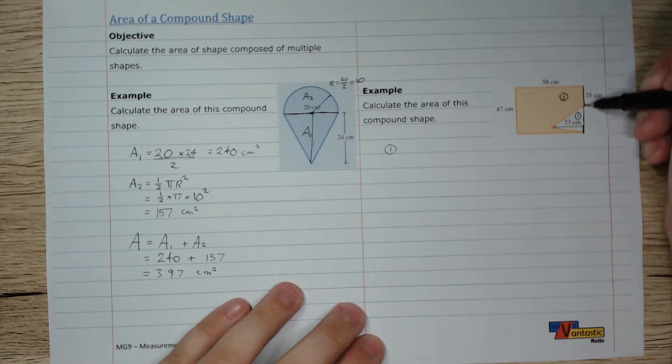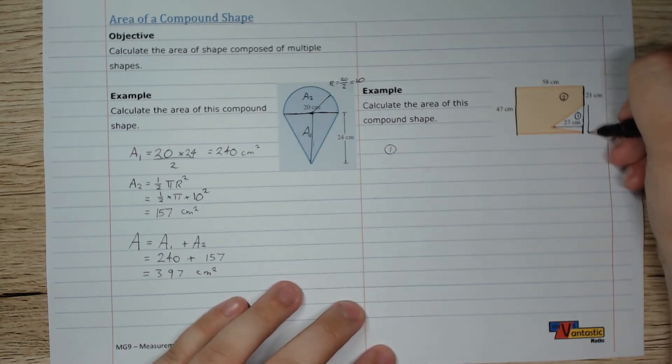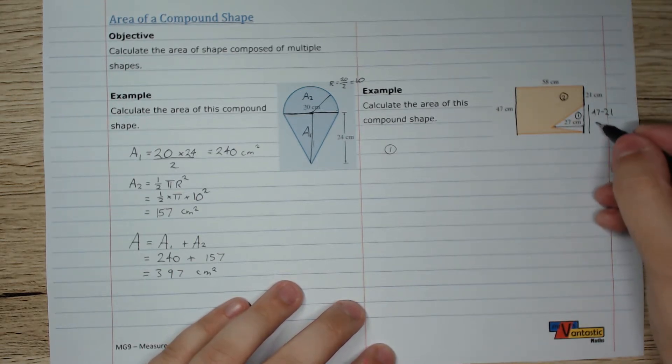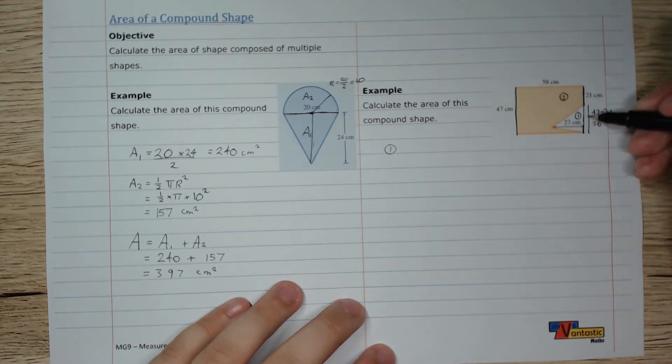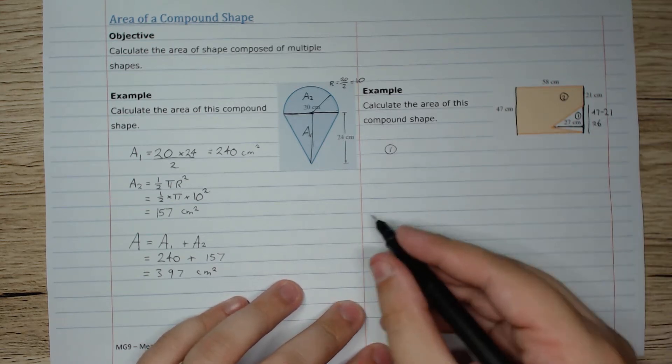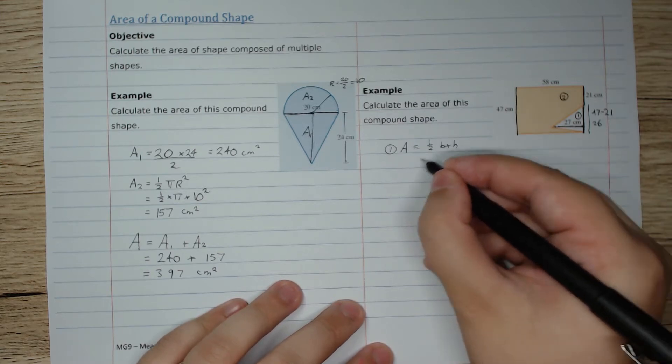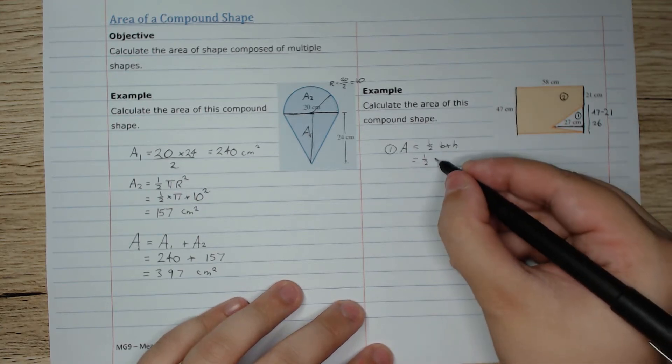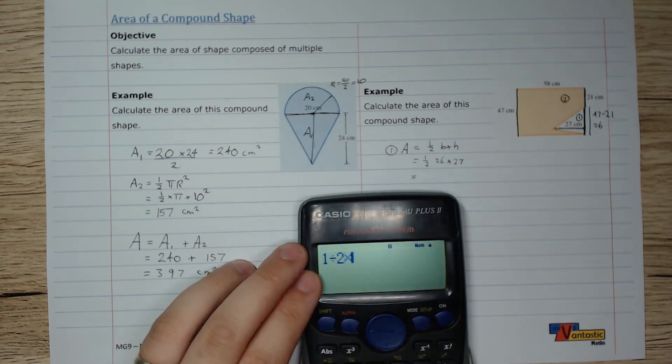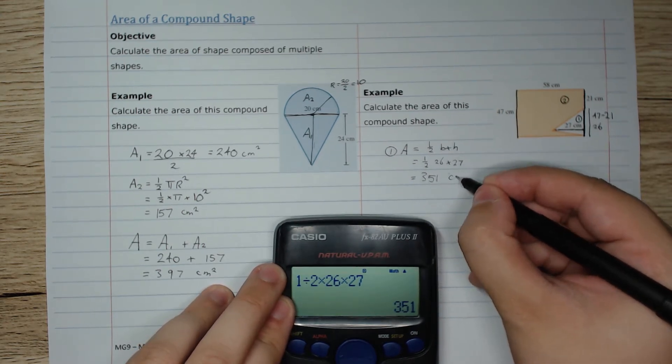So this is 21. We know that this whole length over here is 47, so the leftover bit here has to be 47 minus 21. 47 minus 21 is 26. So this length is 26, the perpendicular height is 27, and so the area of that shape is going to be a half base times height. It's going to be a half of 26 by 27, which is 351 centimeters squared.